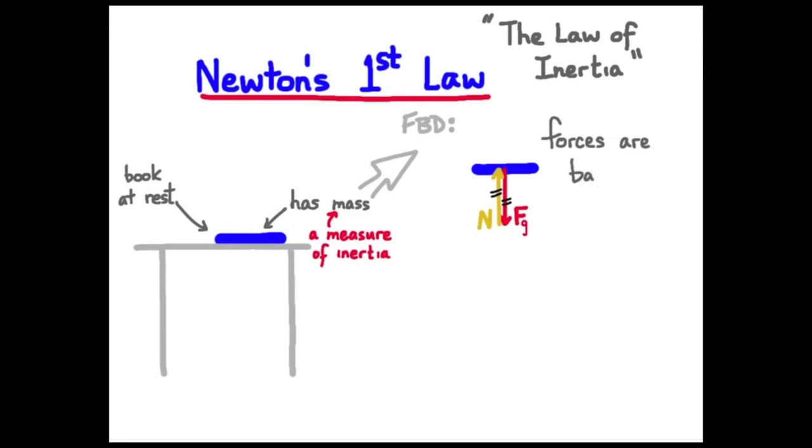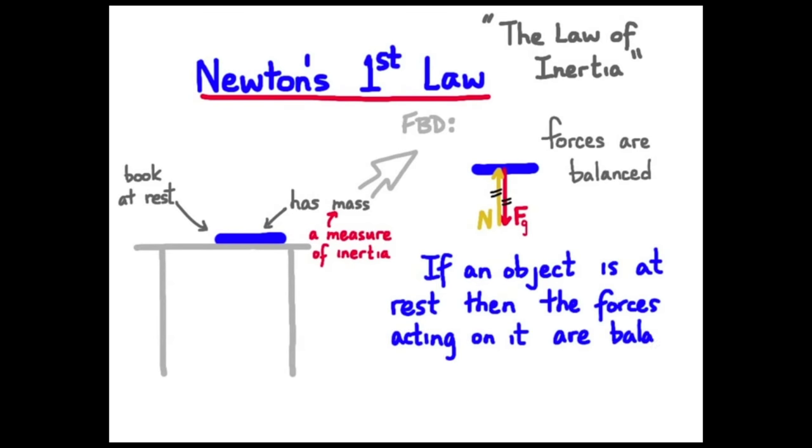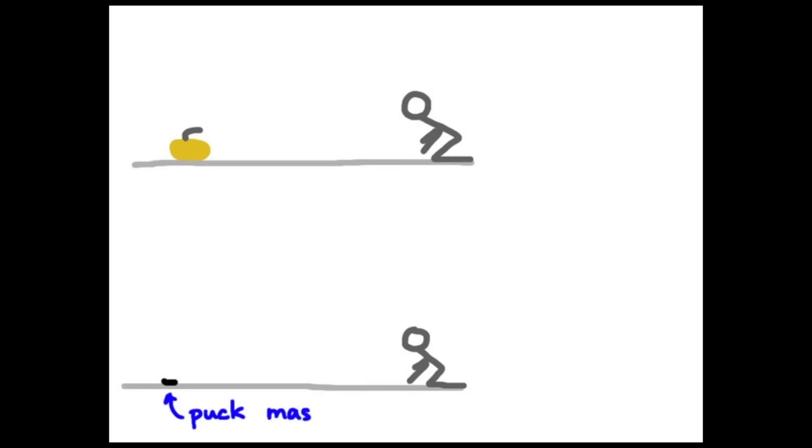And we take different objects and try this out. And we start getting a look at Newton's first law. So we make generalizations and so far we have, if an object is at rest, then the forces acting on it must be balanced. We mentioned a new term here, inertia. And we talked about how mass is a measure of this physical quantity called inertia.